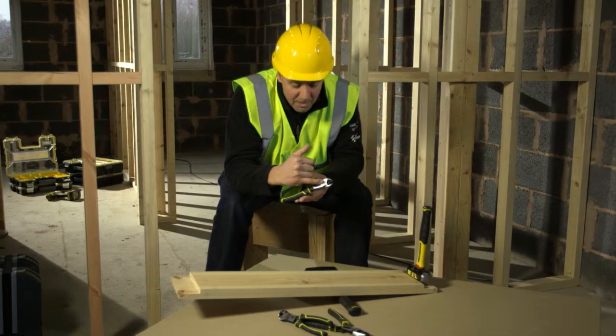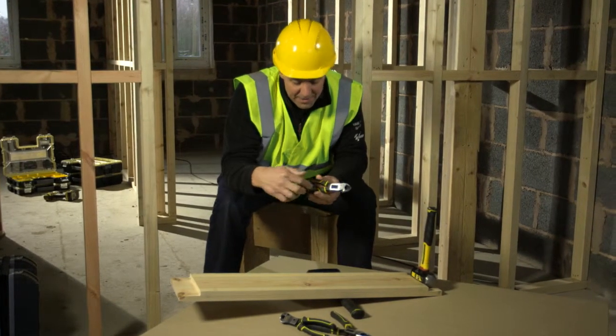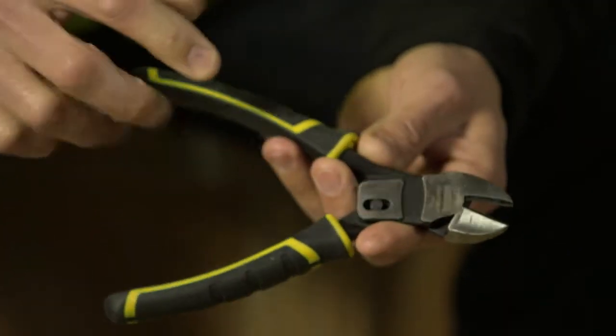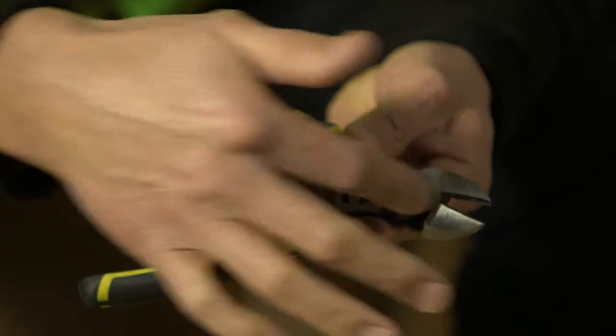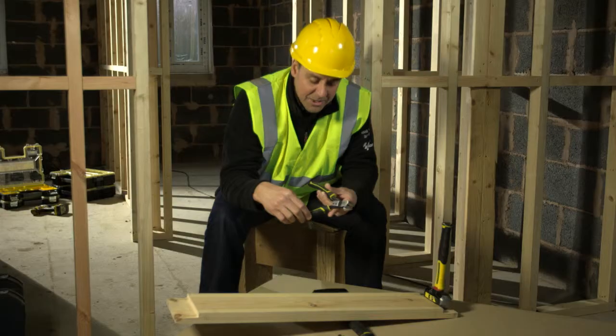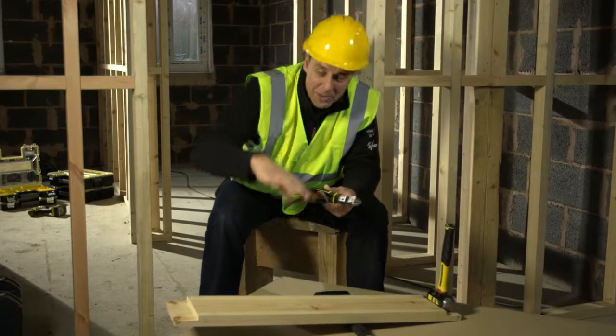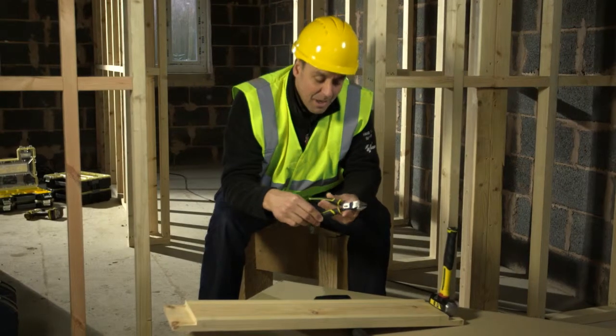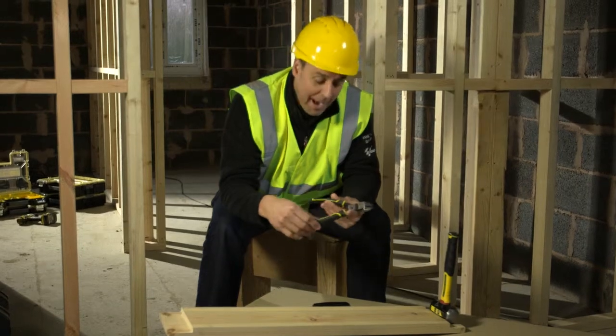You've got your traditional one at the front there, and these are the levers. And then what they've done is they've got a second pivot point which works alongside the first one. So effectively, you've got two pivot points making it even easier to work, and this gives you up to 70% more cutting or crimping power.